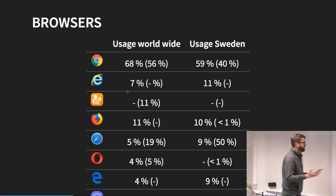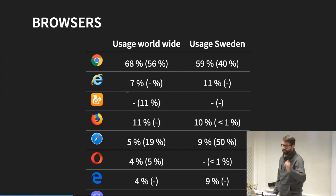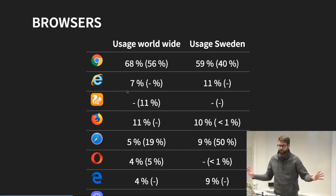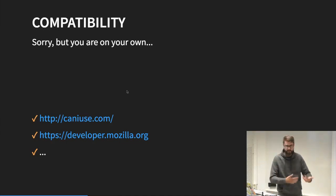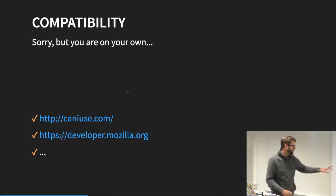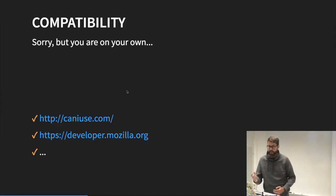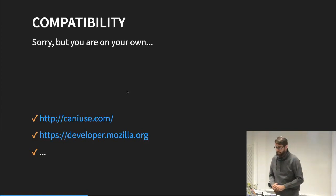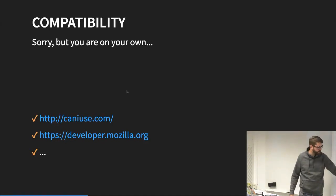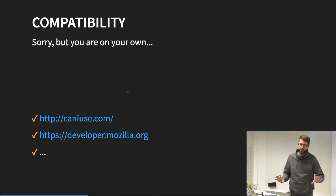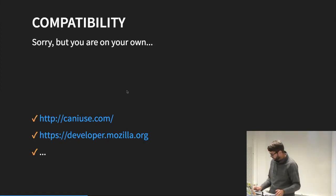Just some words about compatibility. I will not stand here and teach you which browser supports what because it's changing all the time. There are actually techniques I couldn't teach last year that are supported in almost all browsers today, just a year later. That kind of knowledge is something you need to update yourself with every day when working on the web. I recommend caniuse.com — we've looked at that before, so please use it. If you're uncertain about a specific API call, you can check which browsers support it. Also make sure you use developer.mozilla.org — you will see a compatibility chart on all methods, classes, and types there as well.